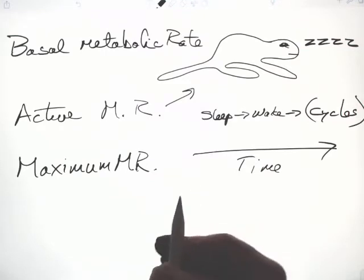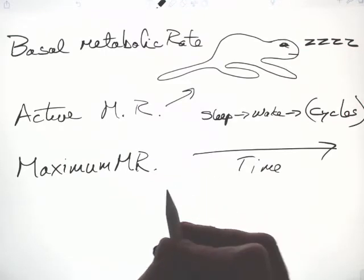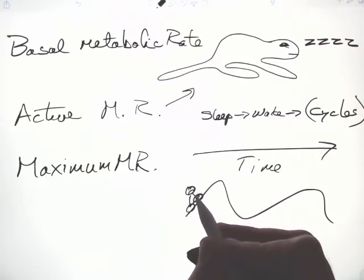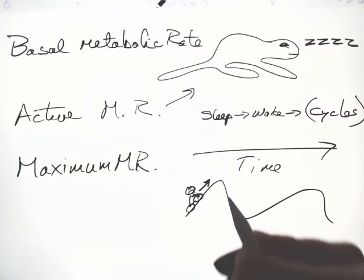Maximum metabolic rate is the most that an animal can do. Think of a Tour de France rider going up a steep hill, the steepest they can manage to go up at the fastest pace they can.